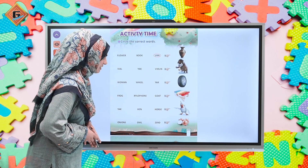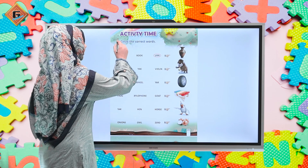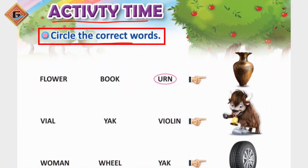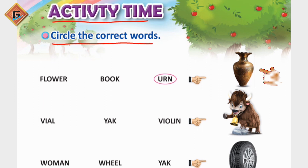Okay students, here is page number 77 and this is our activity time. Circle the correct words. Here are some pictures given and in front of them there are three words. We have to circle the correct name. The first one is already shown — what is this picture? This is 'earned' and the flower and the book are not circled, because the correct word is 'earned'.